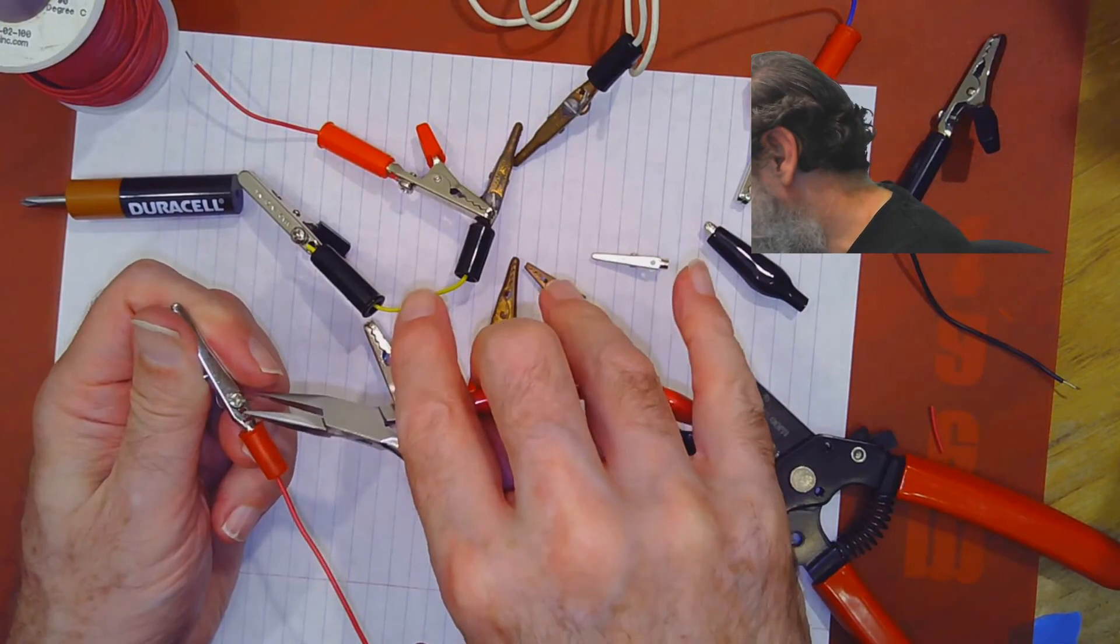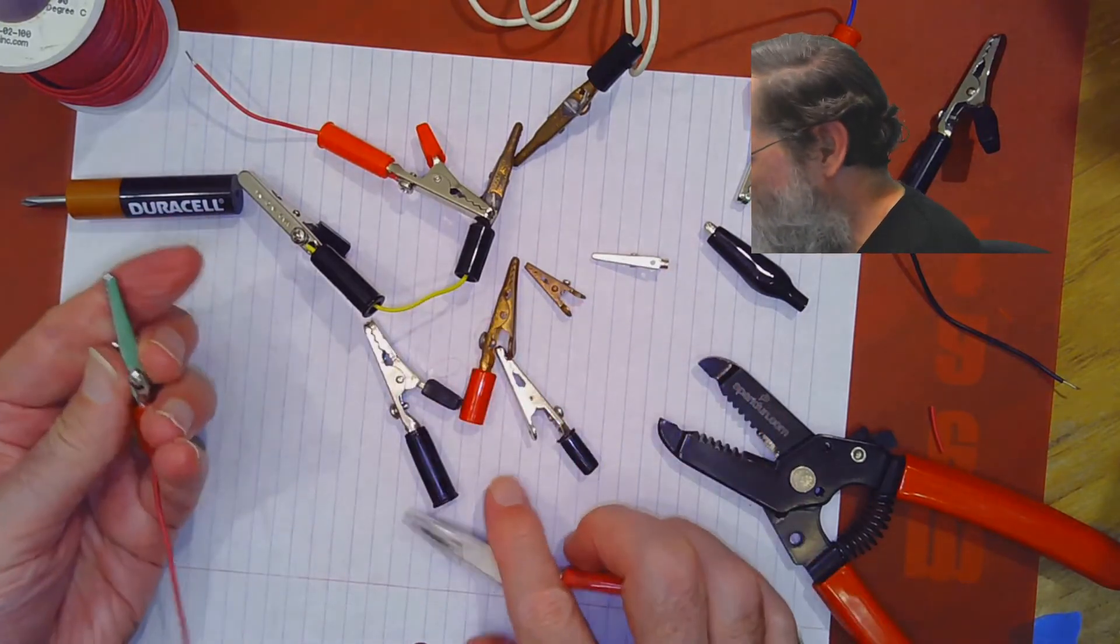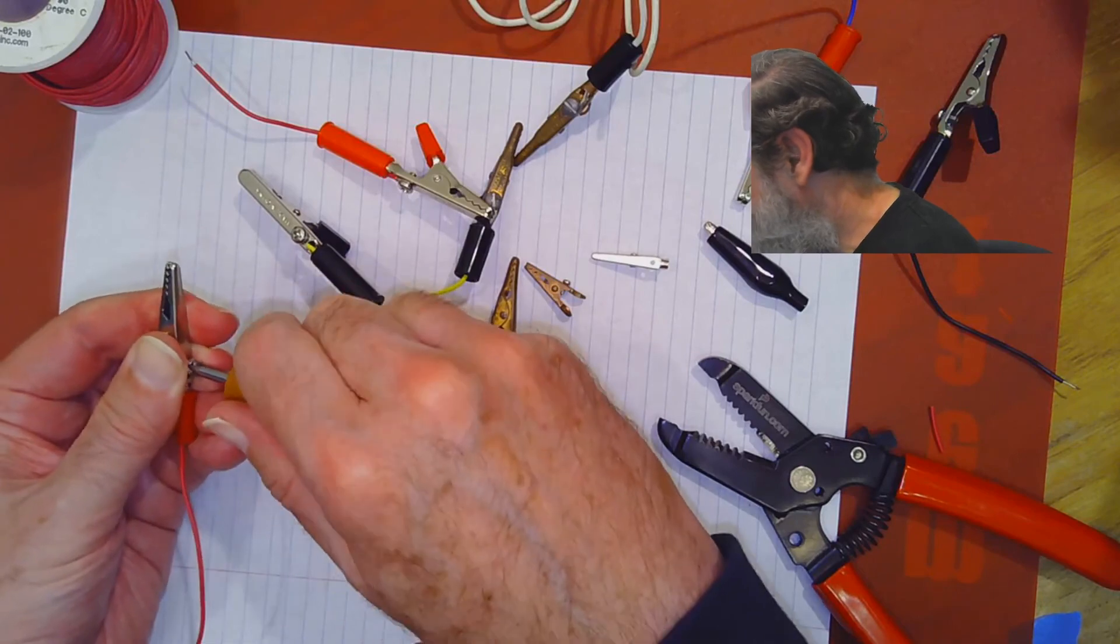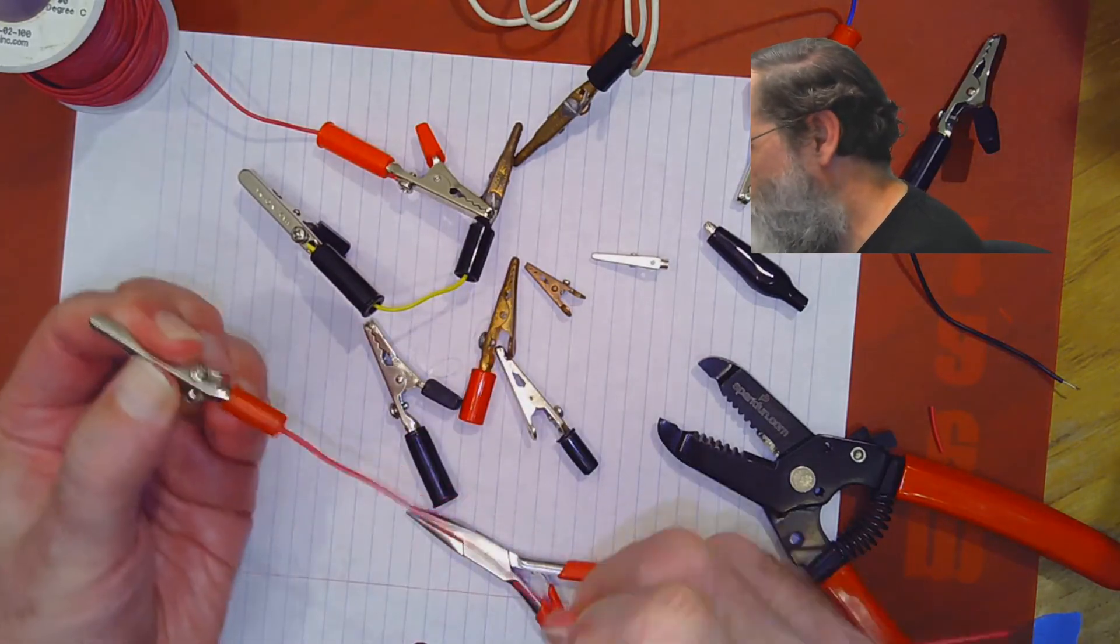And then you can use the pliers to wrap it around the screw and tighten the screw down, and now you've got a nice tight connection.